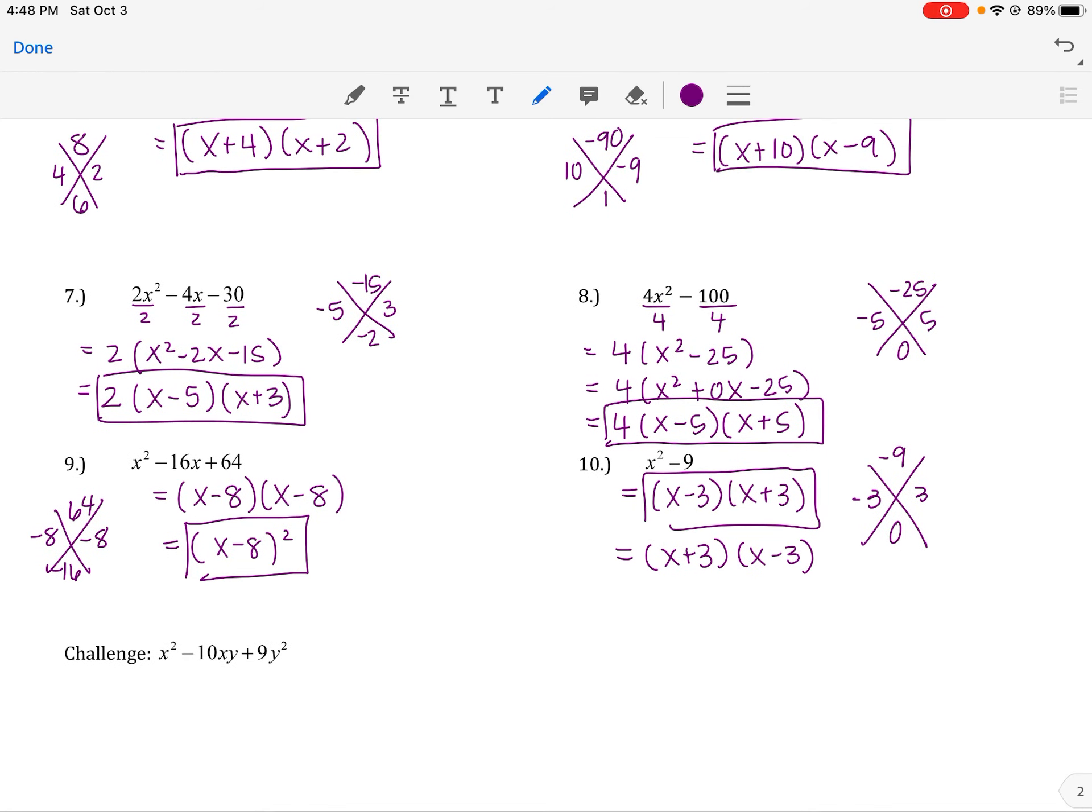If you want to try this challenge one, the answer to it is, what multiplies to 9y squared adds to negative 10. You could say we're just ignoring the x's, you'd have negative 9y and negative 1y. So it's x minus 9y, x minus y. That's your challenge if you want to figure out why that's true. But once again, it is a challenge, you don't have to. Good luck.